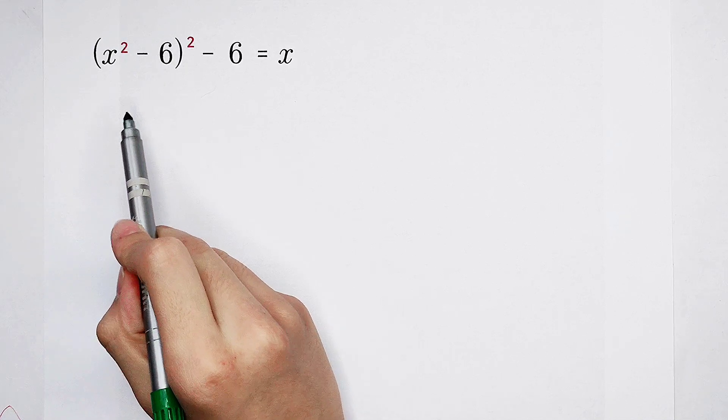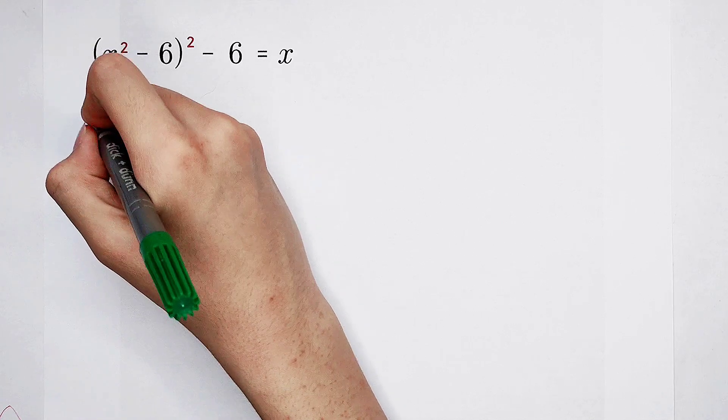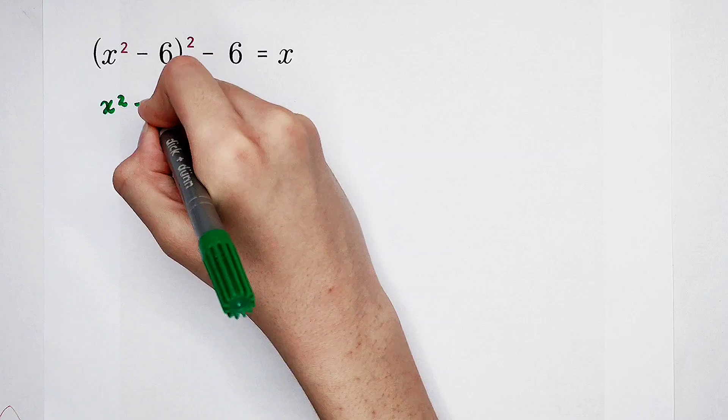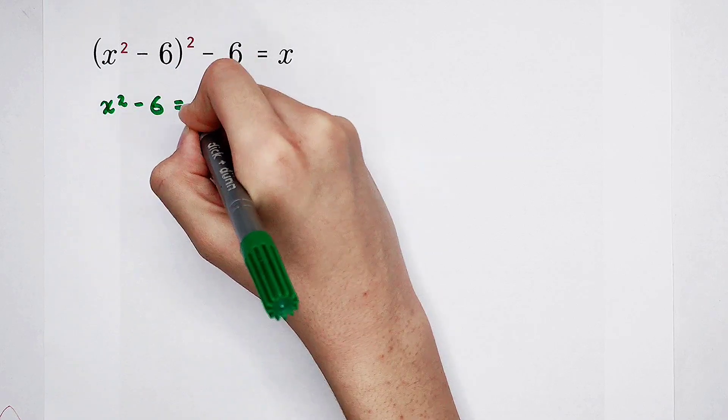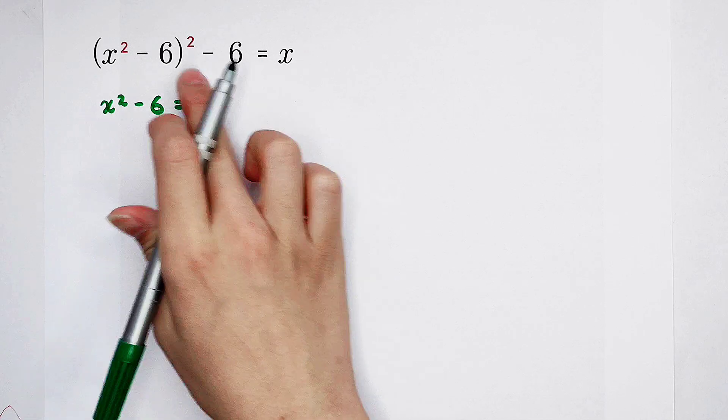So, substitution. x squared minus 6 is a. We let x squared minus 6 equal a.